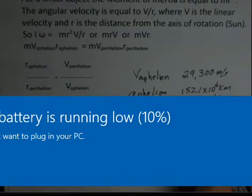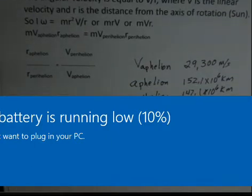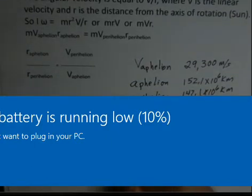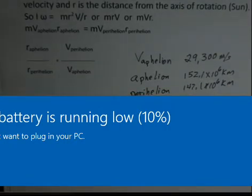Kilometers cancel, the 10 to the 6 cancel. You should calculate this on your own calculator. I came up with 30.3 kilometers per second, speed of the earth at perihelion.